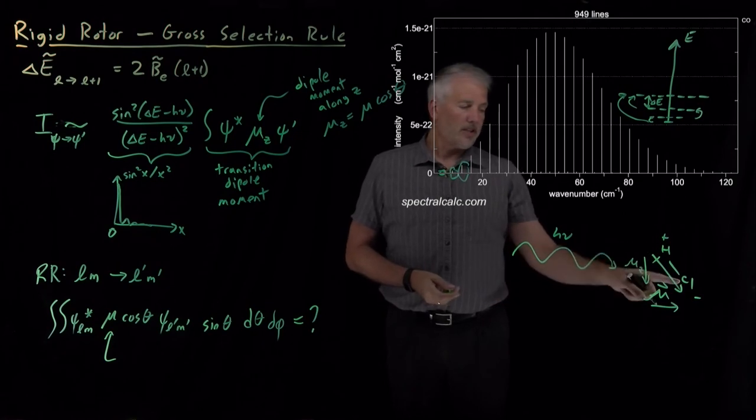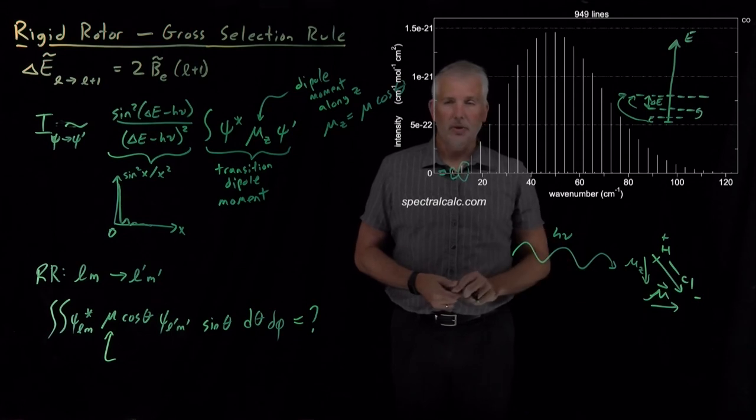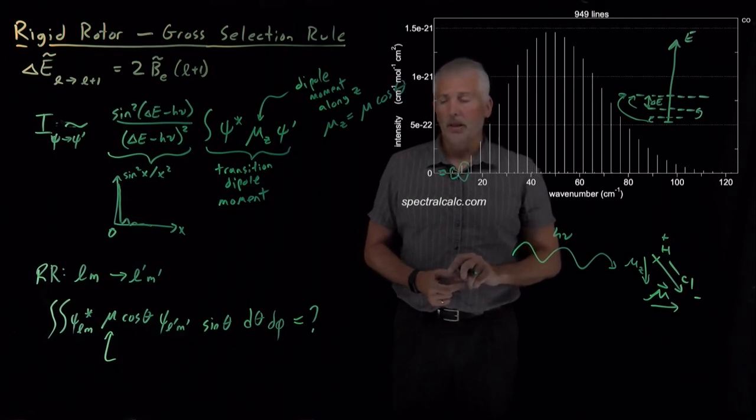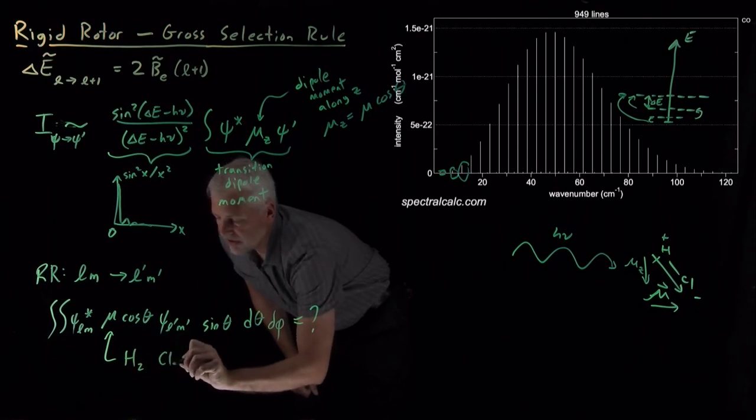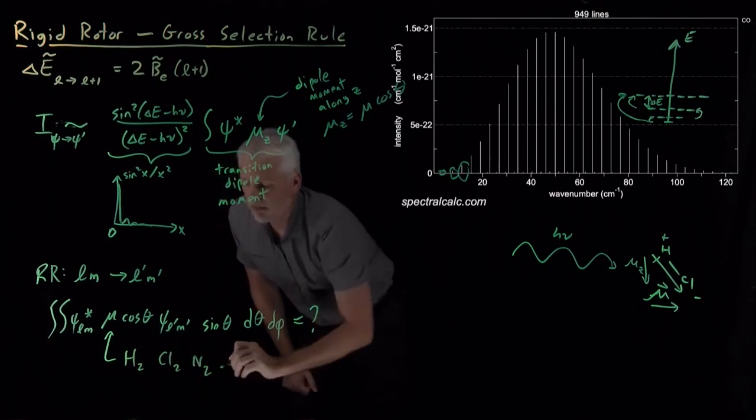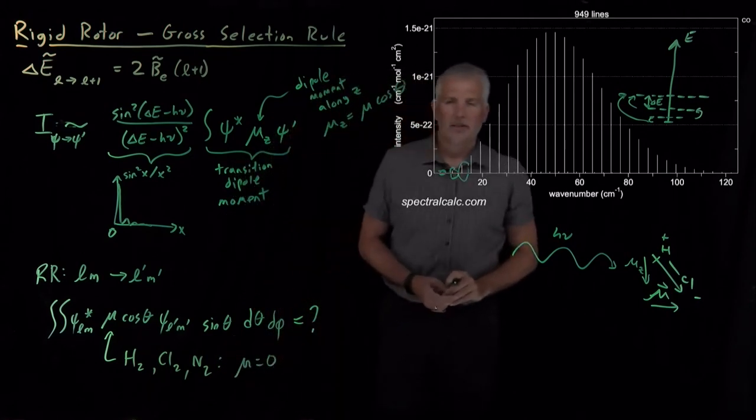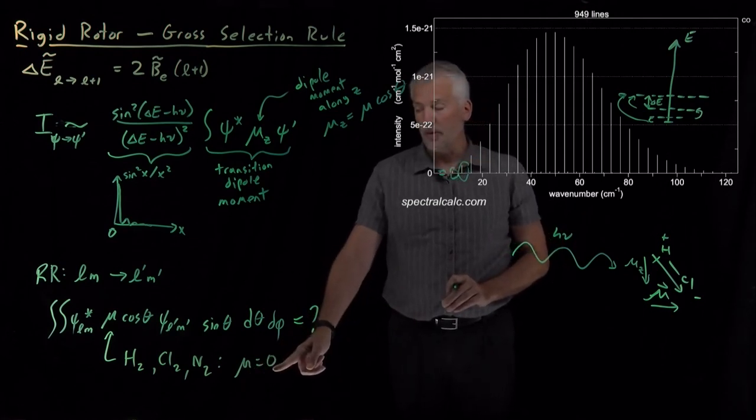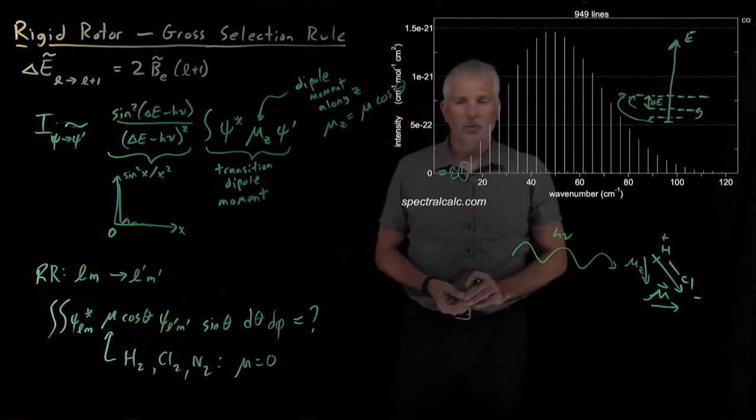So, for a molecule like HCl that has a dipole moment, that dipole moment is some particular value. Every molecule has a different dipole moment that's particular to that molecule, but some molecules have no dipole moment. So for example, a homonuclear diatomic molecule like H2 or Cl2 or N2, any homonuclear diatomic molecule has no dipole moment. They're nonpolar molecules. So for a nonpolar molecule with mu equal to zero, sticking a zero in this integral guarantees that the integral is going to come out to be equal to zero.